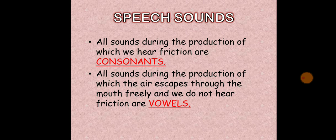For example, if we say the English word 'shoe', we realize that this word is made up of two sounds. When we produce the sound represented by the letters SH slowly, we realize that during the production of this sound, the air escapes through the mouth with friction. When we produce the sound represented by the letter U, the air escapes through the mouth freely and we do not hear any friction. The sound represented by SH in 'shoe' is a consonant sound, and the sound represented by U is a vowel sound.